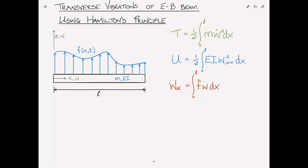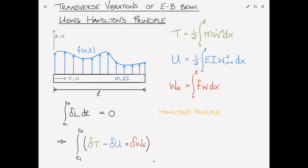Now we have all the pieces we need to proceed. We start by writing down Hamilton's principle, which states that the integral from T1 to T2 of the variation of the Lagrangian L dt is equal to 0. From this we can write the integral from T1 to T2 of the variation of the kinetic energy T, minus the variation of the strain energy U, plus the variation of the external work, dt equals 0.